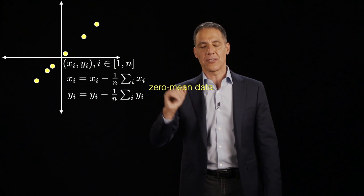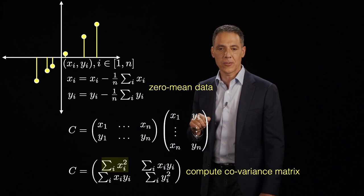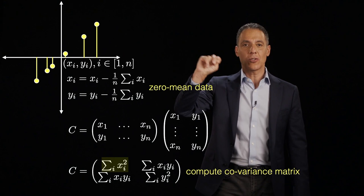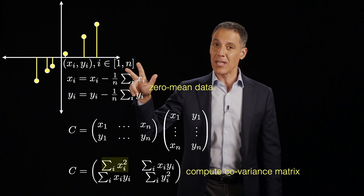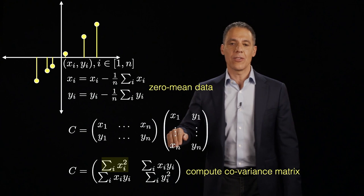Next, we are going to compute the covariance matrix. So we're going to spend a little time talking about this because this is at the heart of principal component analysis. What is the covariance matrix? The covariance matrix for data in a two dimensional space is a two by two matrix. In a three dimensional space, it's a three by three matrix and so on and so forth.